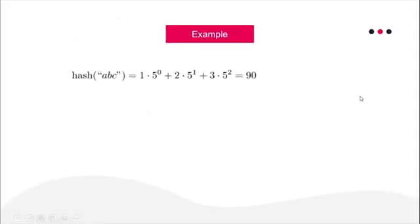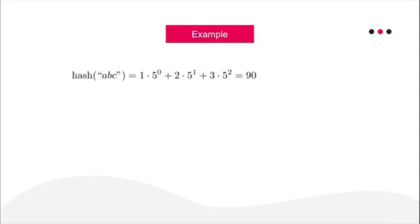Let's apply a concrete example. For a=1, b=2, c=3, and assuming p=5, the hash value of "abc" is: 1 × 5^0 + 2 × 5^1 + 3 × 5^2 = 1 + 10 + 75 = 86... coming out to 90. Note that I'm not taking modulo here — I'll explain why we need that next.